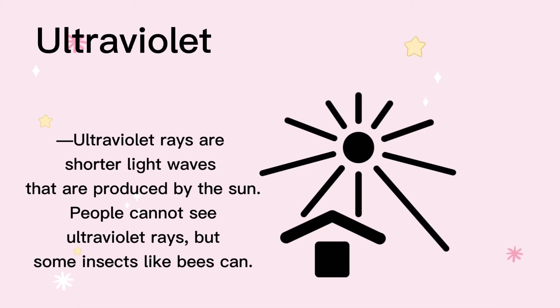Ultraviolet rays are shorter light waves that are produced by the sun. People cannot see ultraviolet rays, but some insects like bees can.